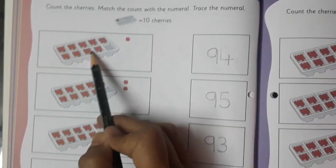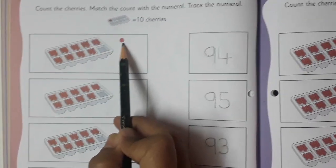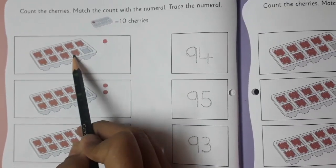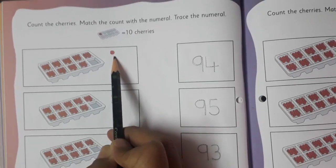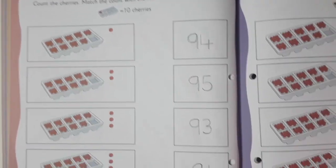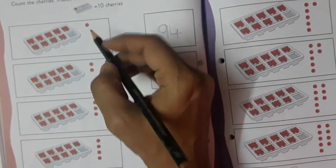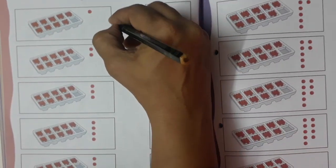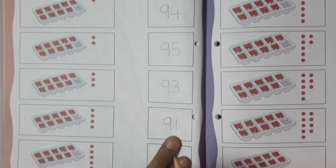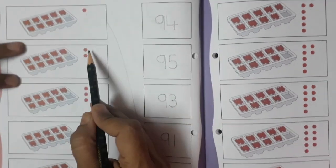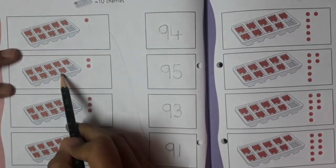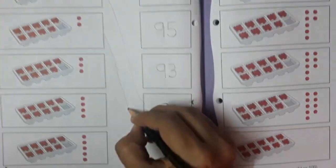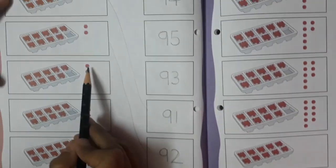So we have to match 91, this 91 count with number 91. So this way, yes. Now here you can see two more cherries are there, so 90 and 2, 92. Now here you can see 1, 2, and 3 cherries are there, so 90 and 3, 93. Very good.